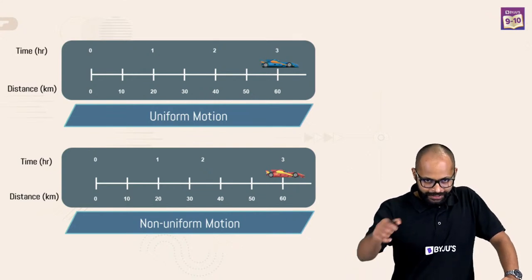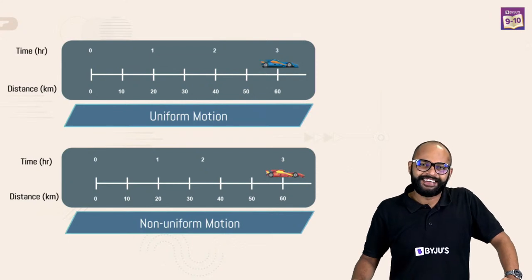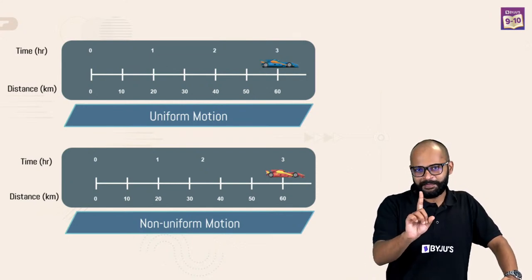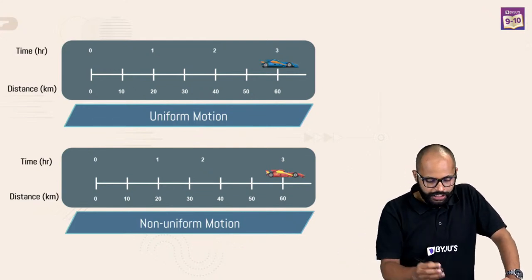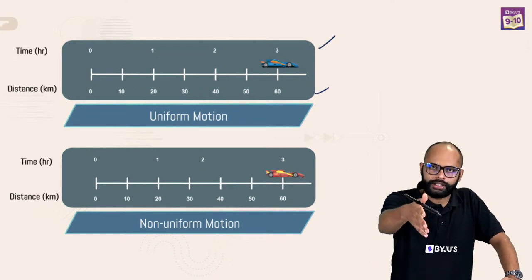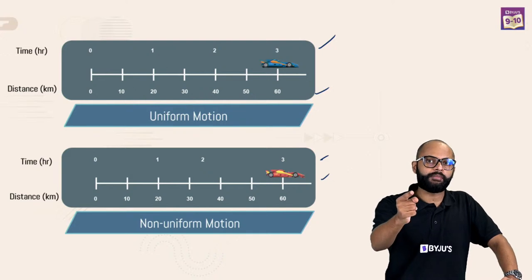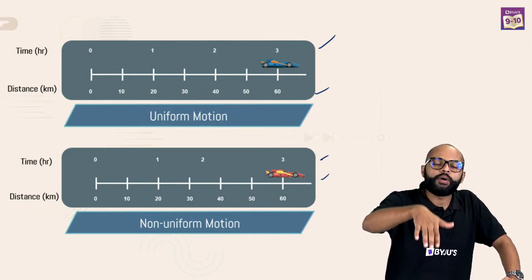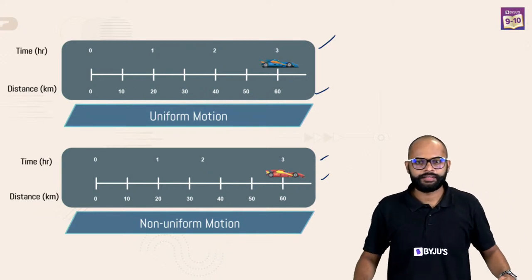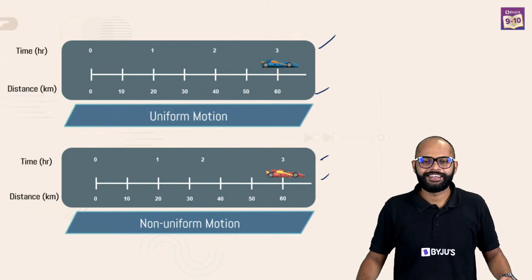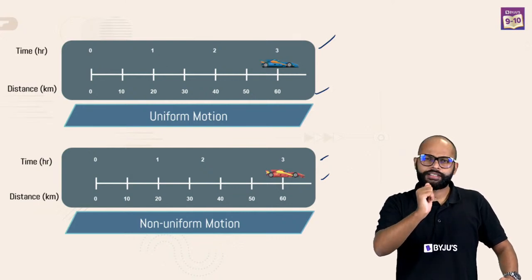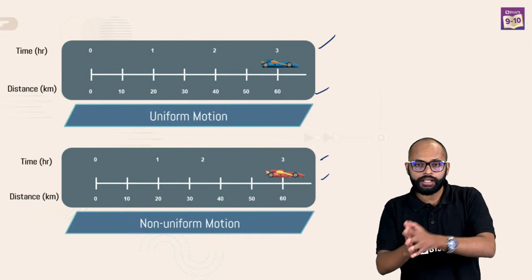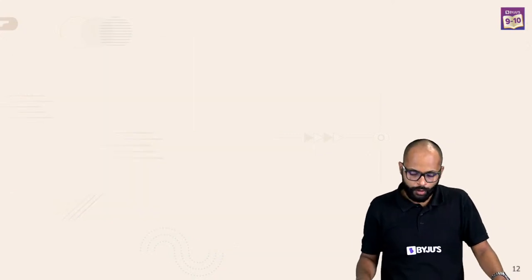It's a nice point that average speed is the same in both cases — because average speed is total distance covered upon total time taken. Total distance is 60, total time is 3, in both cases. So average speed will be same, but in between there are ups and downs. Graphs we'll talk about in great detail in the next session. Today let's focus on what kinds of non-uniform and uniform motions we have.